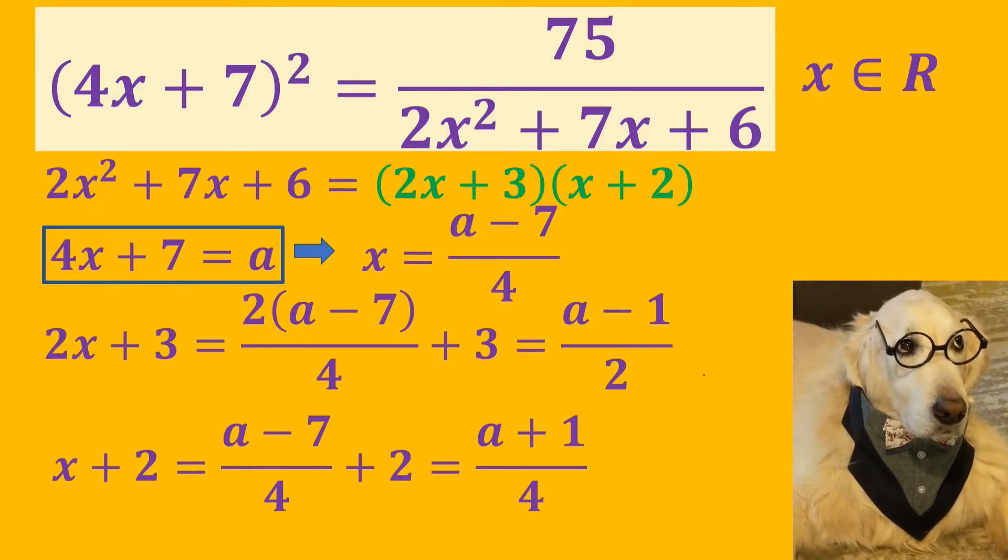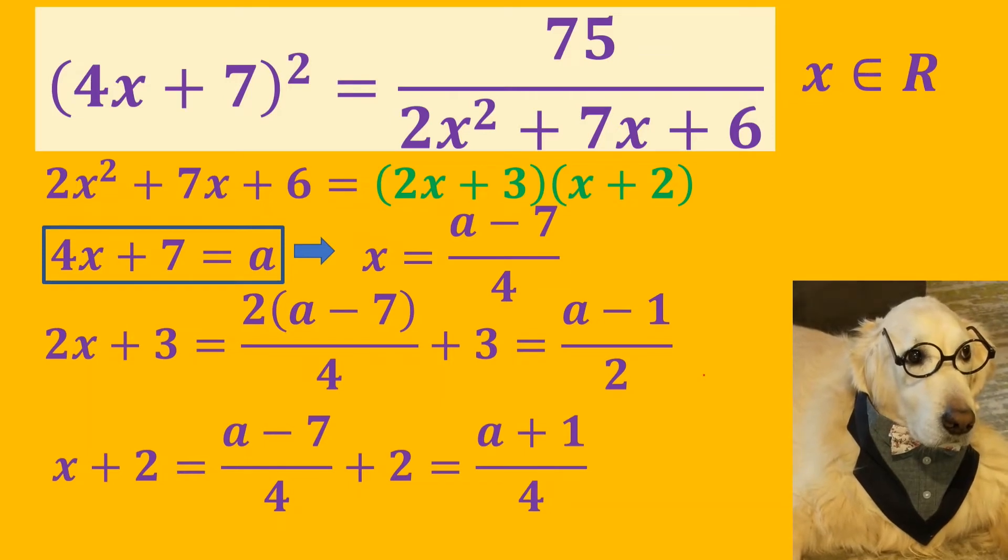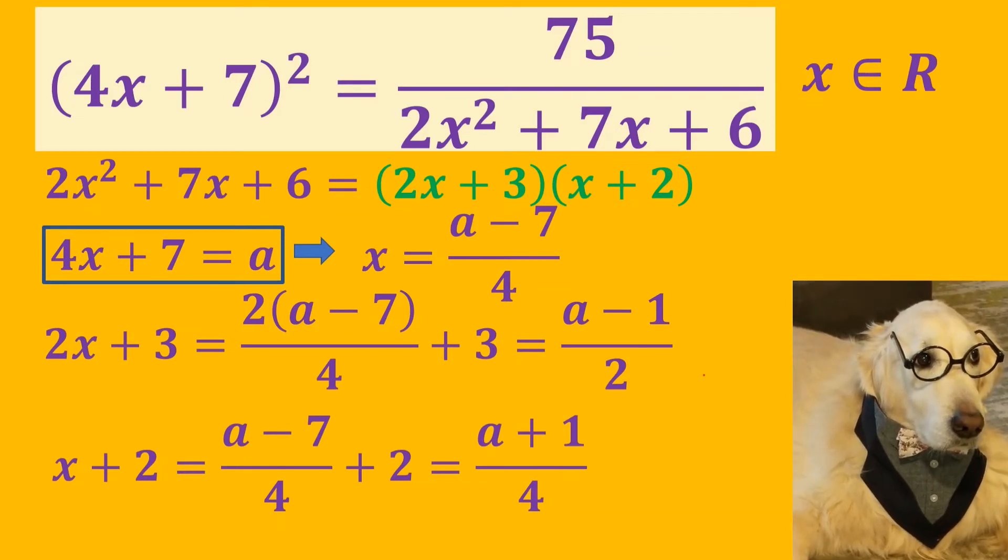And again we substitute x with (a - 7)/4 in x + 2, and we get (a + 1)/4.